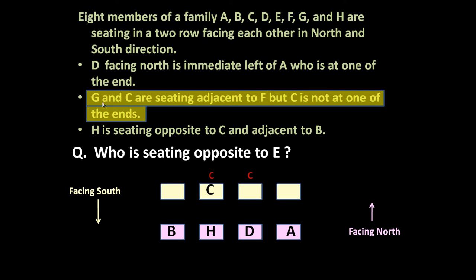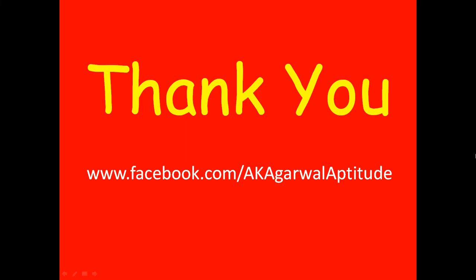So the position of C is now fixed. Going back to the second statement: G and C are adjacent to F, C is not at one of the ends — so C is here, F is here and G is here. Out of all eight positions, seven are now fixed and only one position is left, which will be occupied by E. Now we can answer the question: who is sitting opposite to E? This is E, and opposite to E is B. So obviously B is sitting opposite to E. Friends, thank you very much for watching this video.